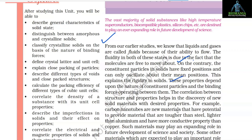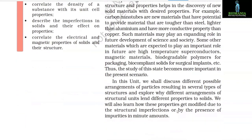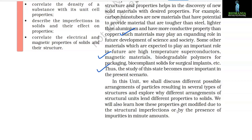These properties depend upon the nature of constituent particles and the binding forces operating between them. The correlation between structure and properties helps in the discovery of new solid materials with desired properties. For example, carbon nanotubes are new materials that have the potential to provide materials tougher than steel, lighter than aluminium, and more conductive than copper. Other materials expected to play an important role in the future include high temperature superconductors, magnetic materials, biodegradable polymers for packaging, and biocompatible solids for surgical implants.